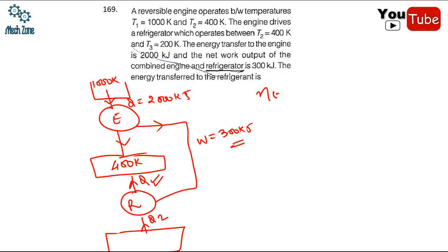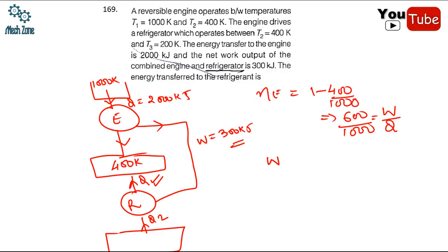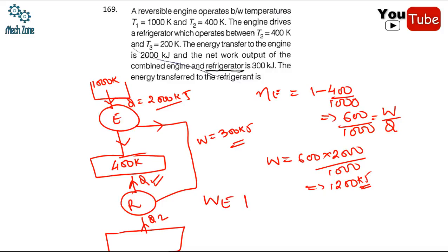Combined work output is 300 kilojoules. Efficiency of the engine = 1 - T_low/T_high = 1 - 400/1000 = 600/1000. This equals work/Q_added, so work done = (600/1000) × 2000 = 1200 kilojoule. Since combined work = 300: W_engine + W_refrigerator = 300, so work done on the refrigerator = 1200 - 300 = 900 kilojoule (work input to refrigerator is -900 kJ, i.e., 900 kJ consumed).